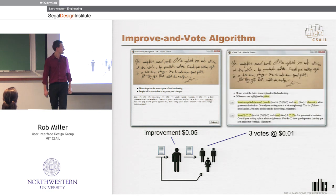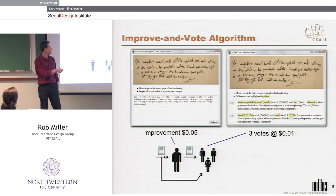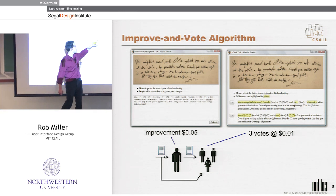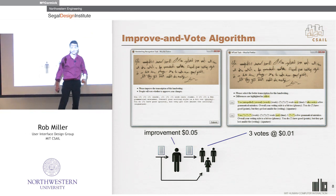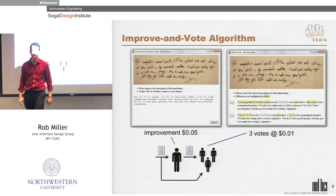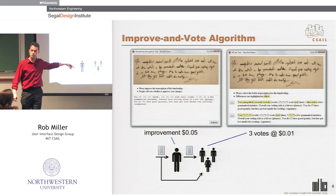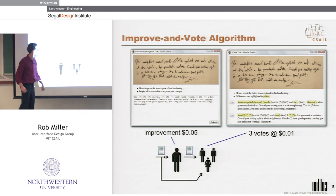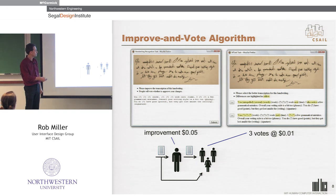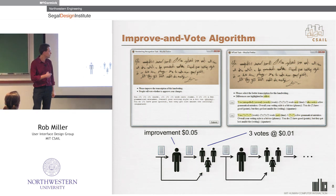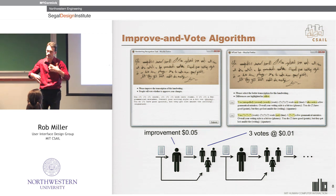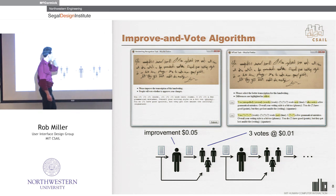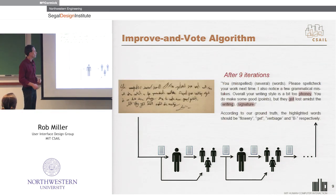We pass both versions to a small group of voters and ask: which of these is a better partial transcription? The highlighting shows where the two transcriptions differ, and we randomize the order so it's not immediately obvious which was input and which was output. We collect three votes, and the winner goes on to another stage. We rinse and repeat until we've got it all filled in.